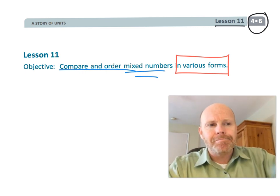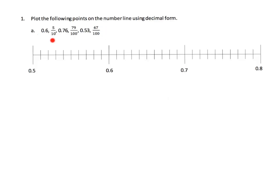Let's get started. We've got these numbers and we're going to arrange them on the number line. Once they're arranged on the number line, that immediately tells you the order from least to greatest. So 0.6 — you can see it right here. Since we see five tenths, six tenths, seven tenths, the little lines in between the tenths are hundredths. That's important for us to recognize.